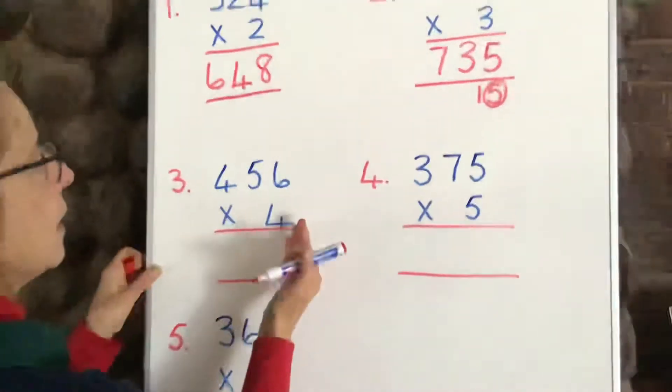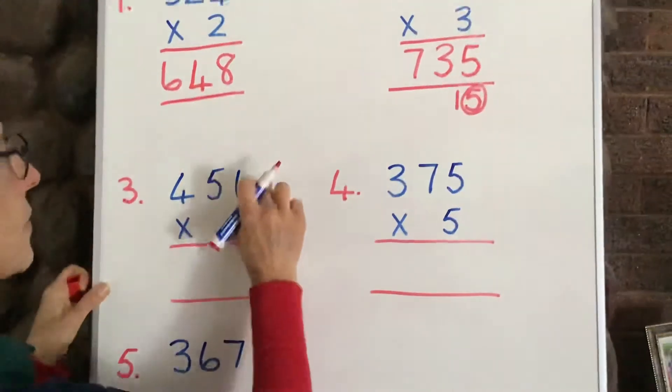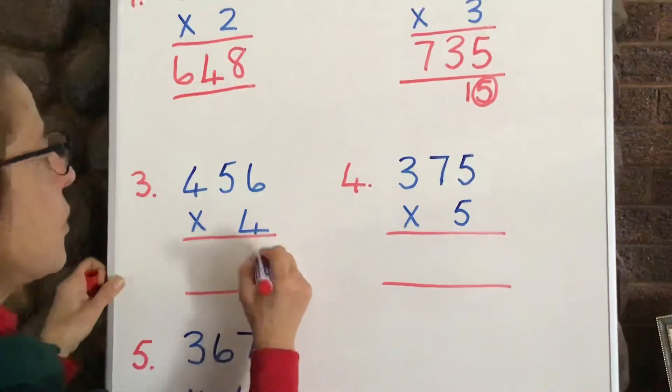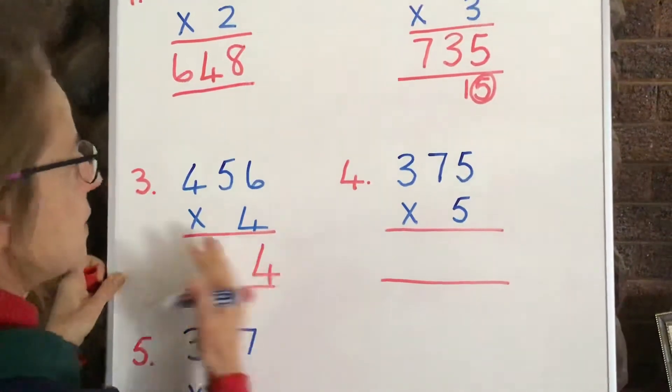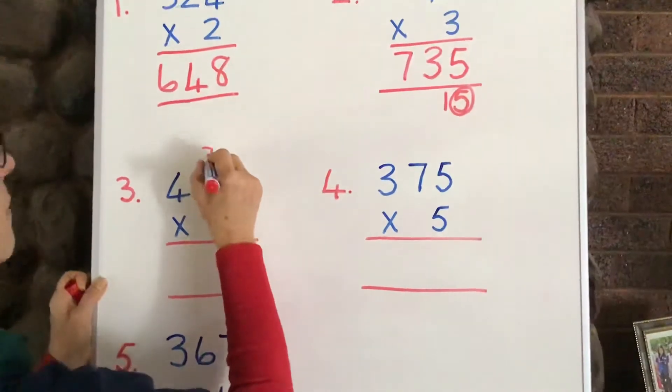Right, let's move to number 3 now. Now, units, 3 times 6, at least 4 times 6, 24. Put down the 4 from the 24, the unit goes there, remember, and the 10 goes up there, it was 24.